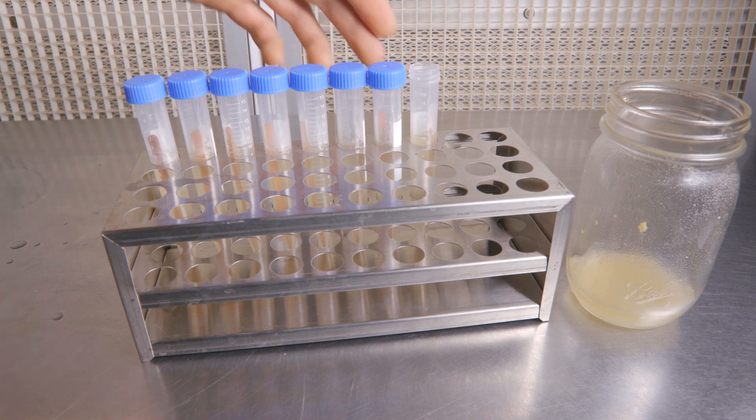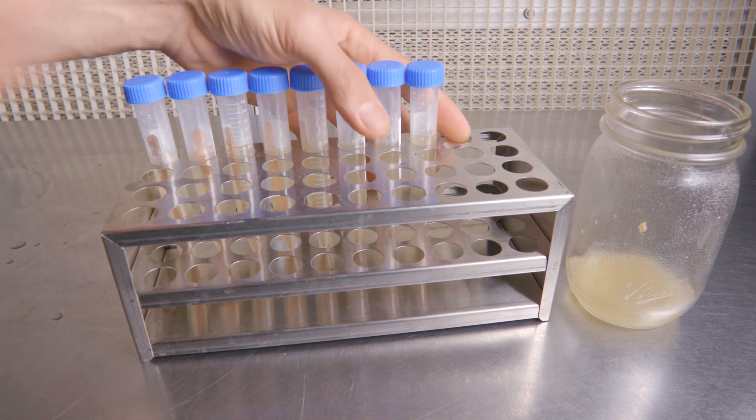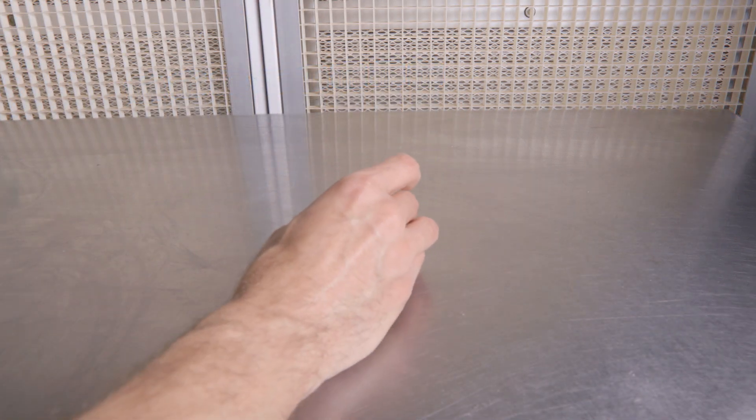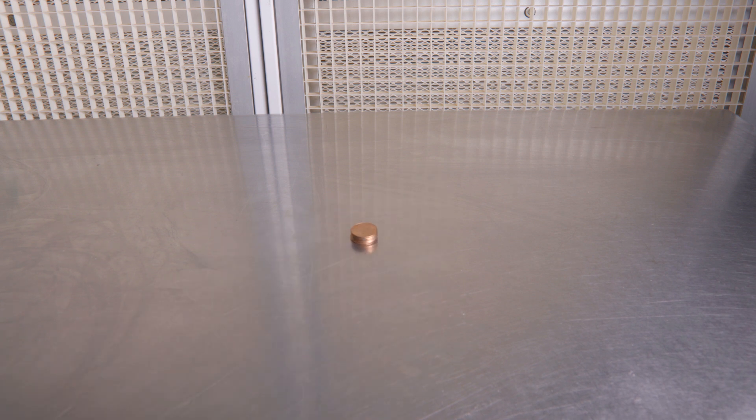Now it's time to cap off our slants and place them at a slope for cooling. Here I'm using a stack of pennies. Add or subtract pennies to get the slope of your preference.